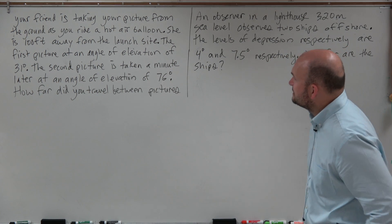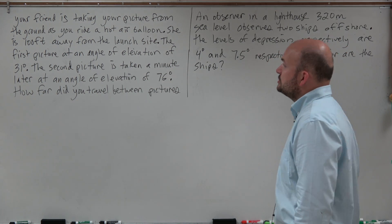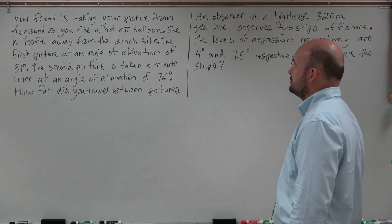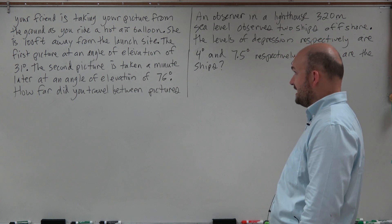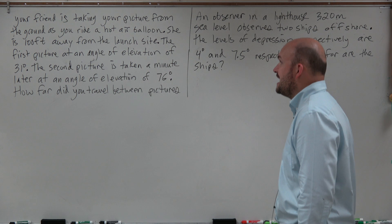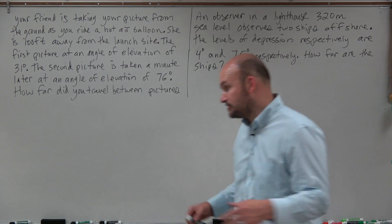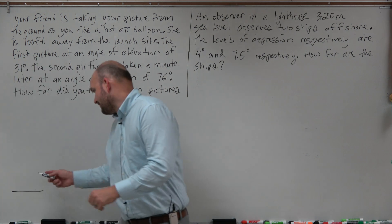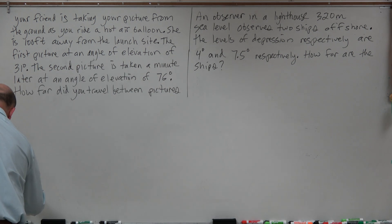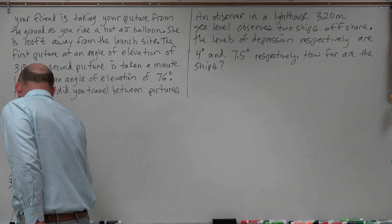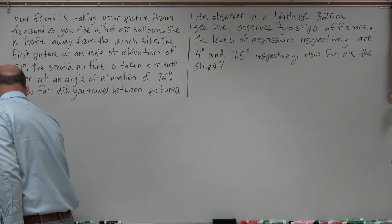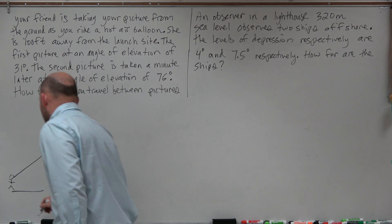So the first problem says: your friend has taken your picture from the ground as you ride a hot air balloon. She is 100 feet away from the launch site. The first picture is taken at an angle of elevation of 31 degrees. The second picture is taken a minute later at an angle of elevation of 76 degrees. How far did you travel between the pictures? Let's create a ground level — here's your friend, and here you are in the hot air balloon. You are 100 feet away.